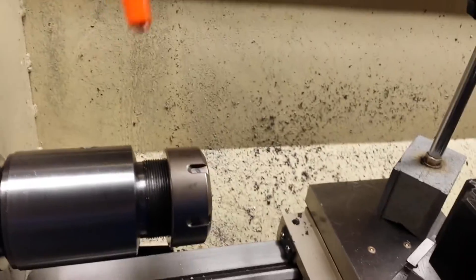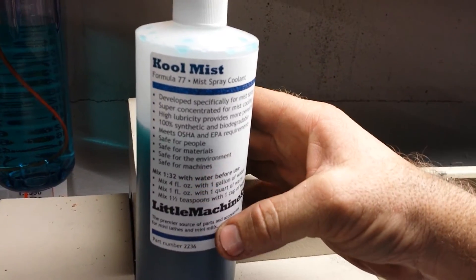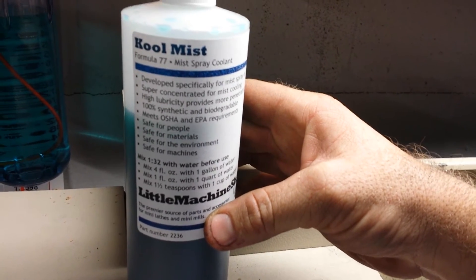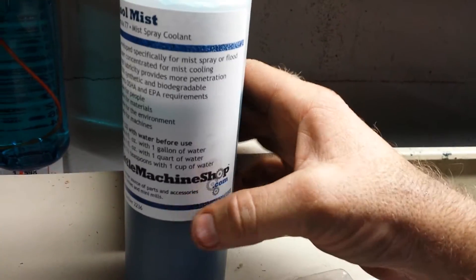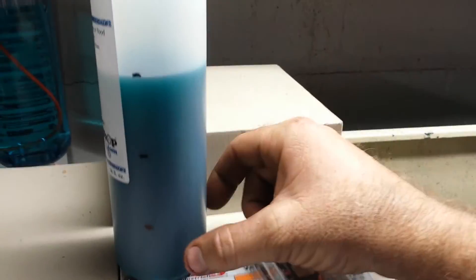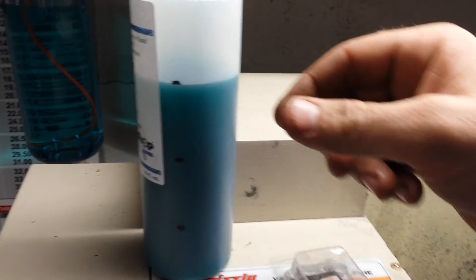But basically, the coolant that I'm running is just regular old cool mist. You mix it 4 fluid ounces with 1 gallon, I just marked it into 4 equal parts and mixed up a gallon.